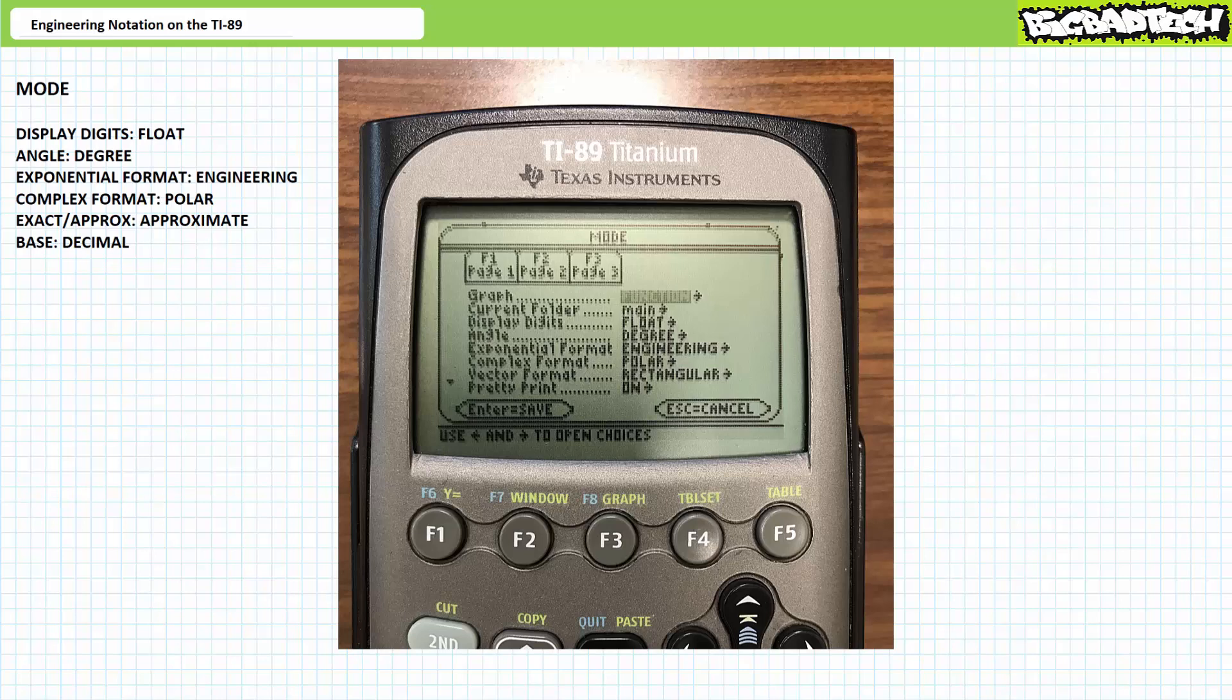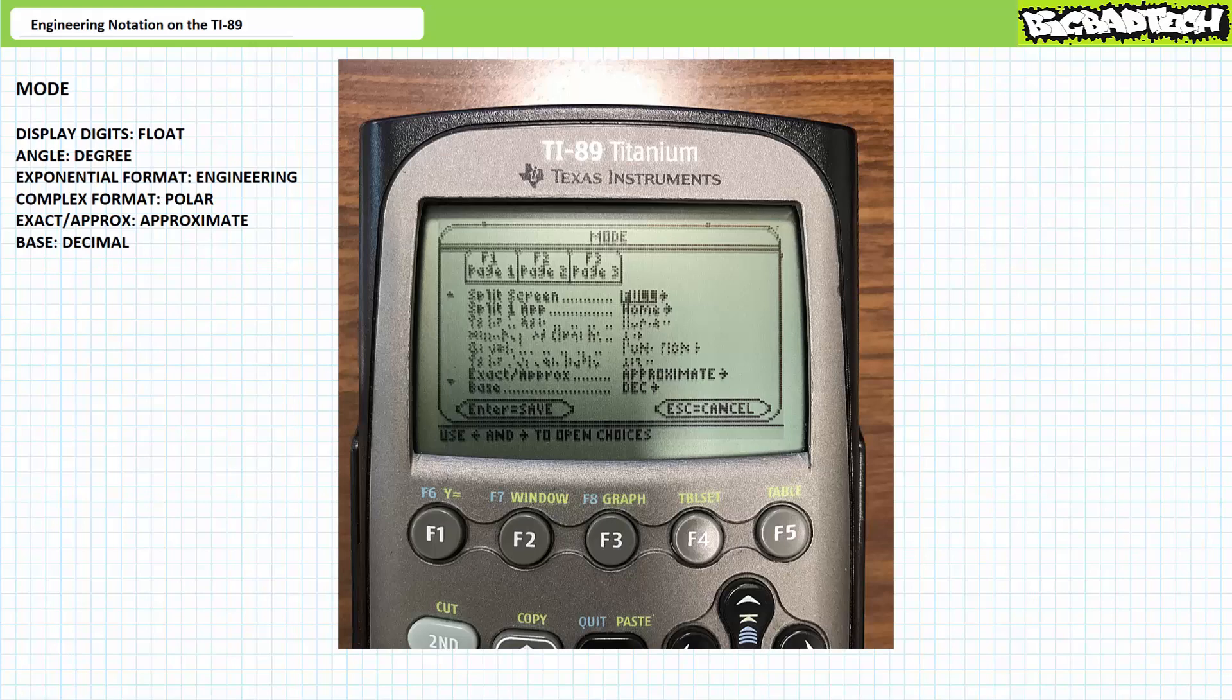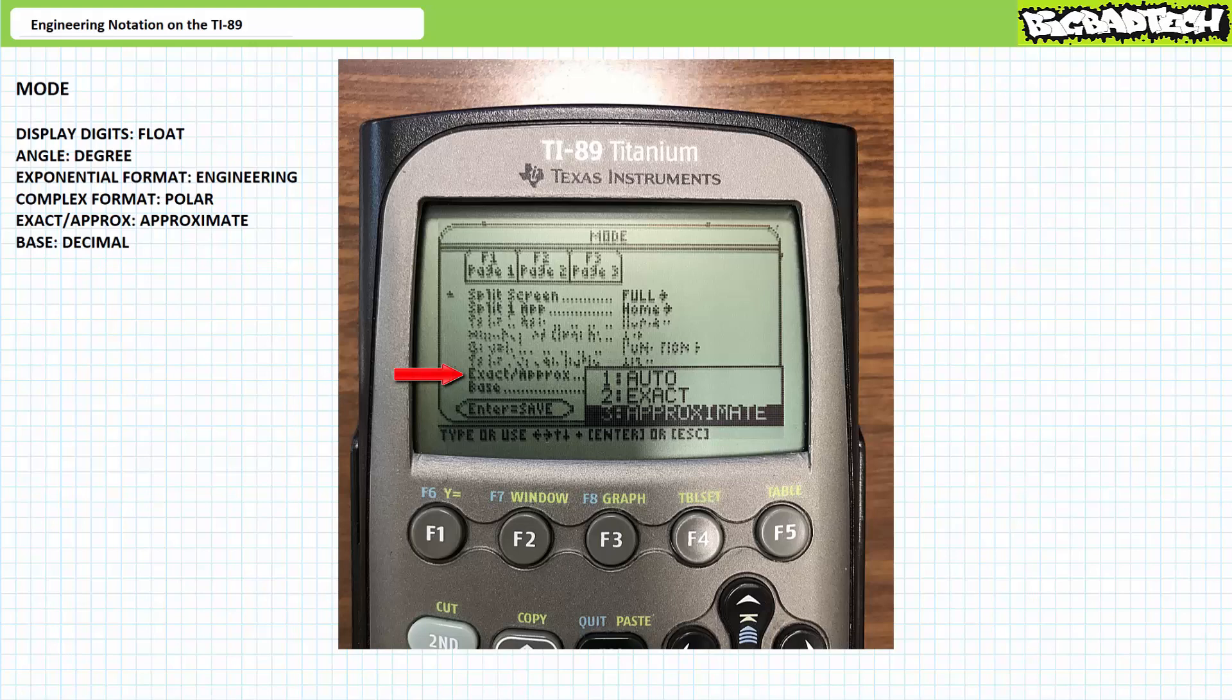We'll return to discuss engineering format in a moment. Let's move on to the second page of the mode function by pressing F2. You can pretty much ignore everything on the F2 page with the exception of the last two options, exact versus approximate and base. Walk down to exact versus approximate using the down arrow key. Press the right arrow to open up the menu options. Use the down arrow key to walk to option three, approximate. Press enter to select this option. The base we're going to be using is decimal.